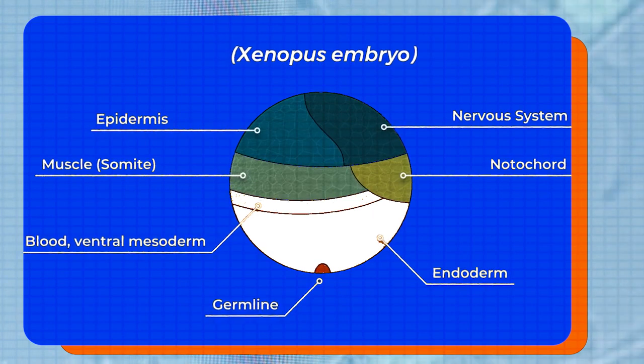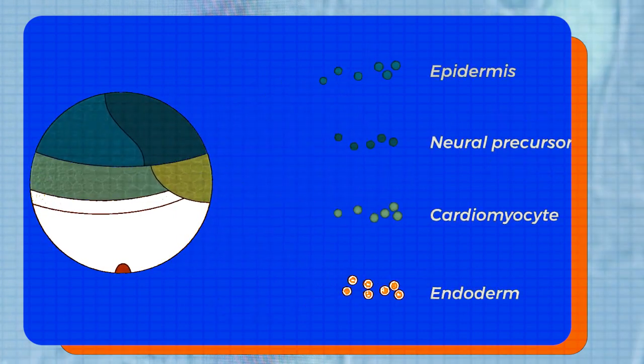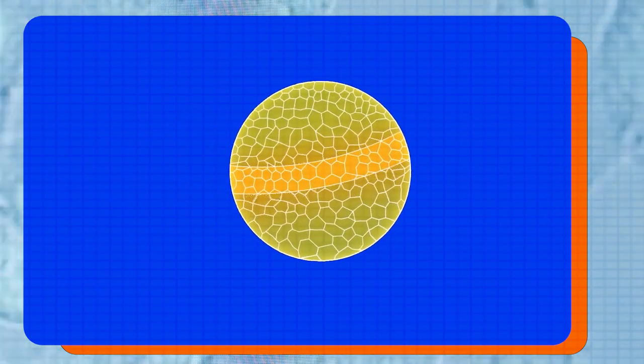The cells on top generally become the epidermis or part of the central nervous system. The cells in the middle form the muscles and the cells on the bottom form the endoderm, which leads to the development of organs. These different sections can be disassembled into their different components and then reassembled into a new arrangement. This de- and reconstruction are done entirely by hand using forceps. The desired sections of the embryo are removed, then basically mushed back together.